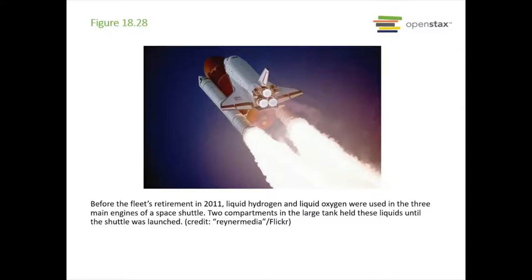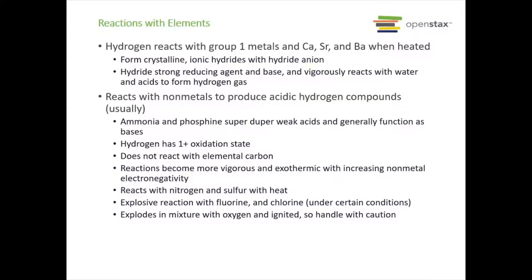Before they retired the fleet in 2011, liquid hydrogen and oxygen were used in the three main engines of space shuttles, held in two compartments in the large tank until the shuttle was launched. When it comes to reacting with elements, hydrogen reacts with group 1 metals, and from group 2 it reacts with calcium, strontium, and barium when heated. It forms crystalline ionic hydrides with the hydride anion H minus. Hydrides are very strong reducing agents — the hydride anion is a strong reducing agent and very strong base.